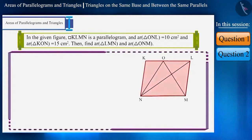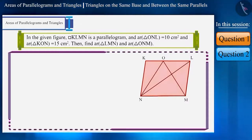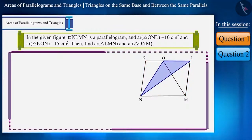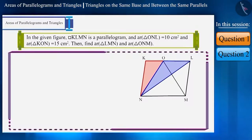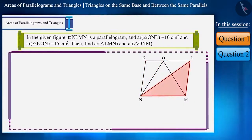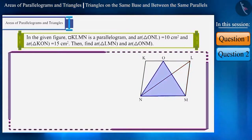In the given figure, KLMN is a parallelogram and the given areas of triangles ONL and KON are 10 cm² and 15 cm² respectively. Find the area of triangle LMN and triangle OMN.